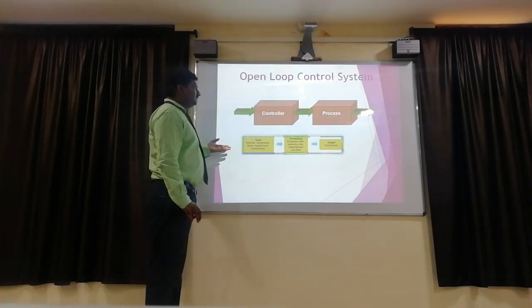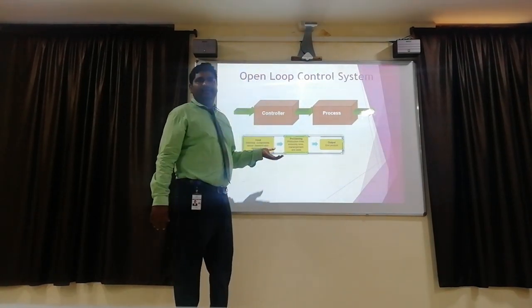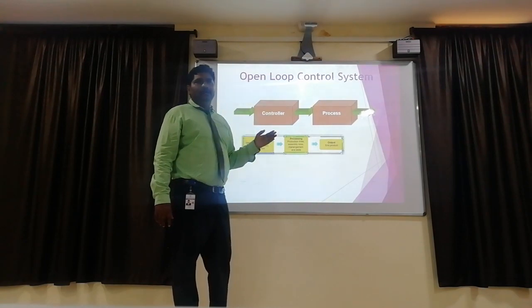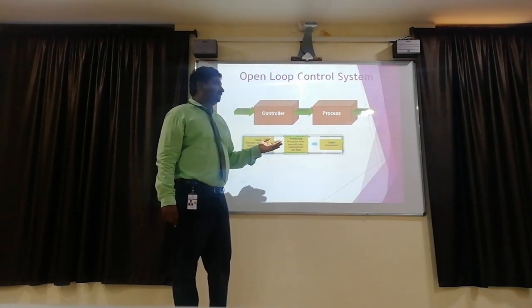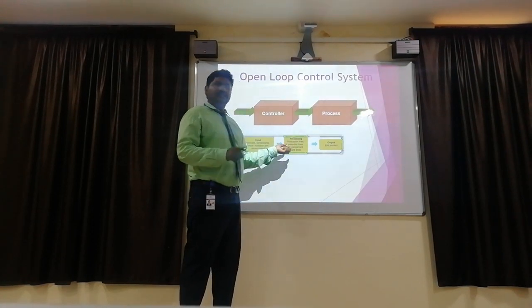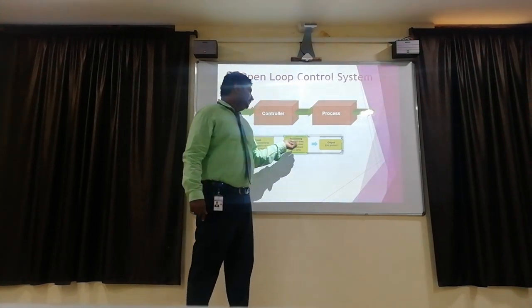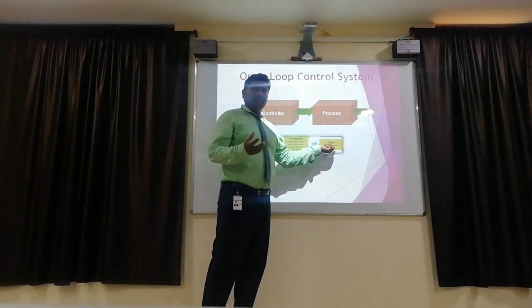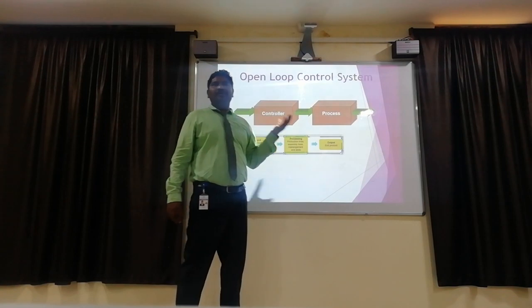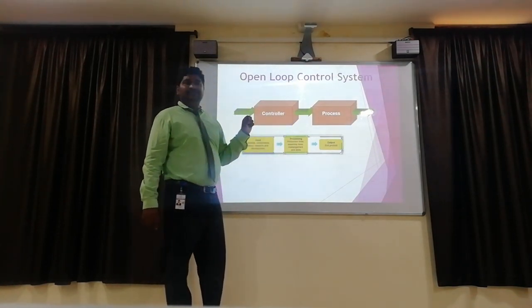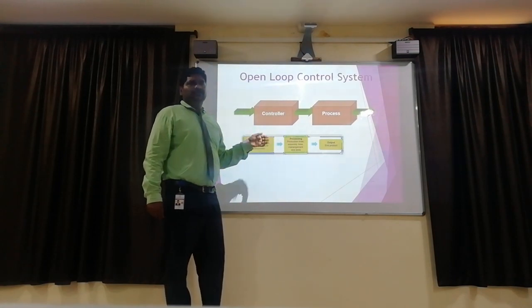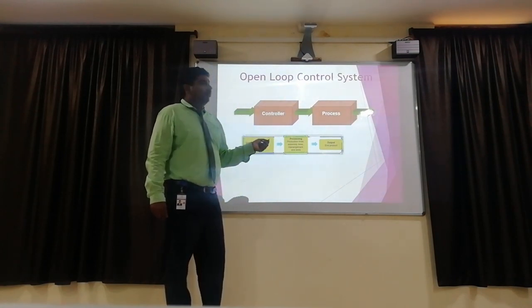The open loop control system operates manually. It is also called a non-feedback control system or manually operating control system. The material is given as input, the machine operates to produce different shapes, and the output is the finished product. Another example of an open loop control system is a traffic signal. The traffic signal operates with a preset timer, and any changes are made manually. That is the traffic signal system.